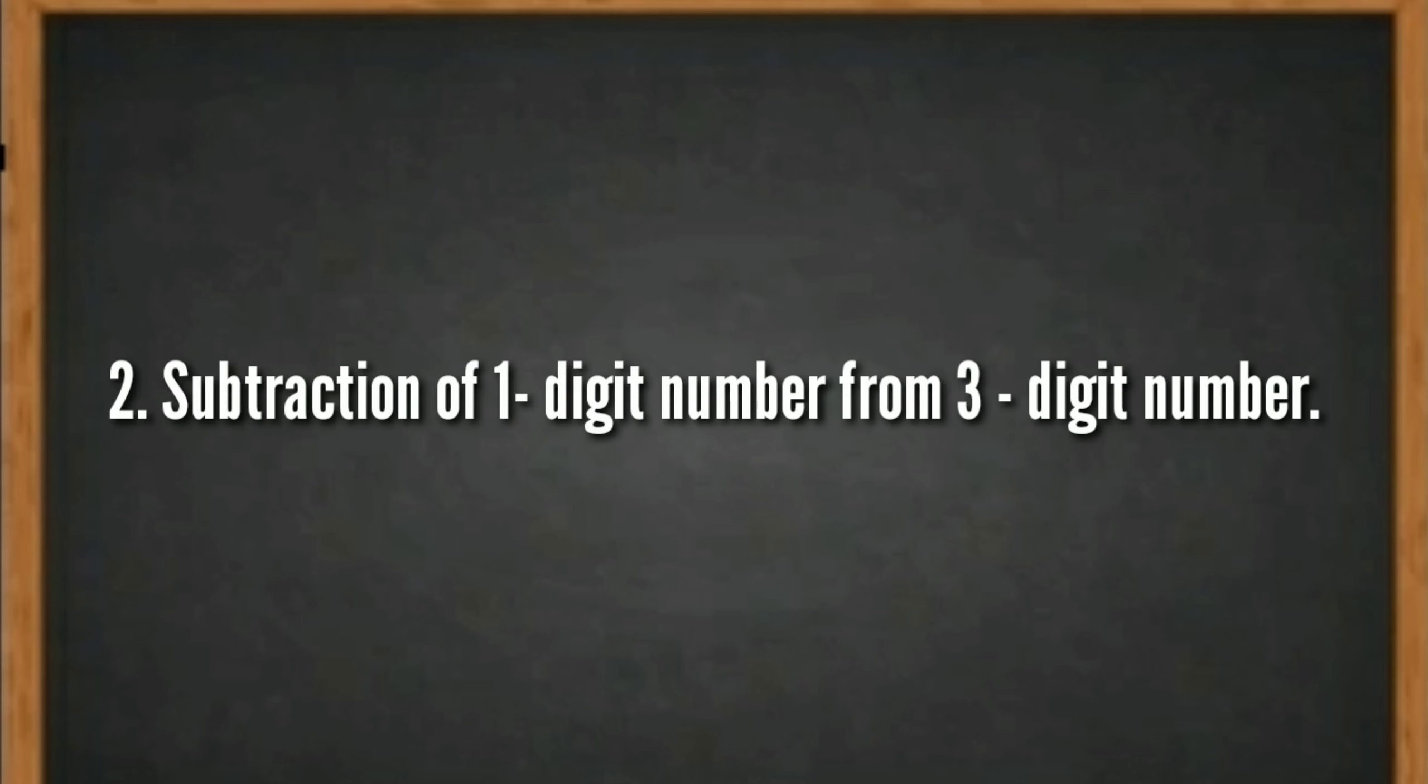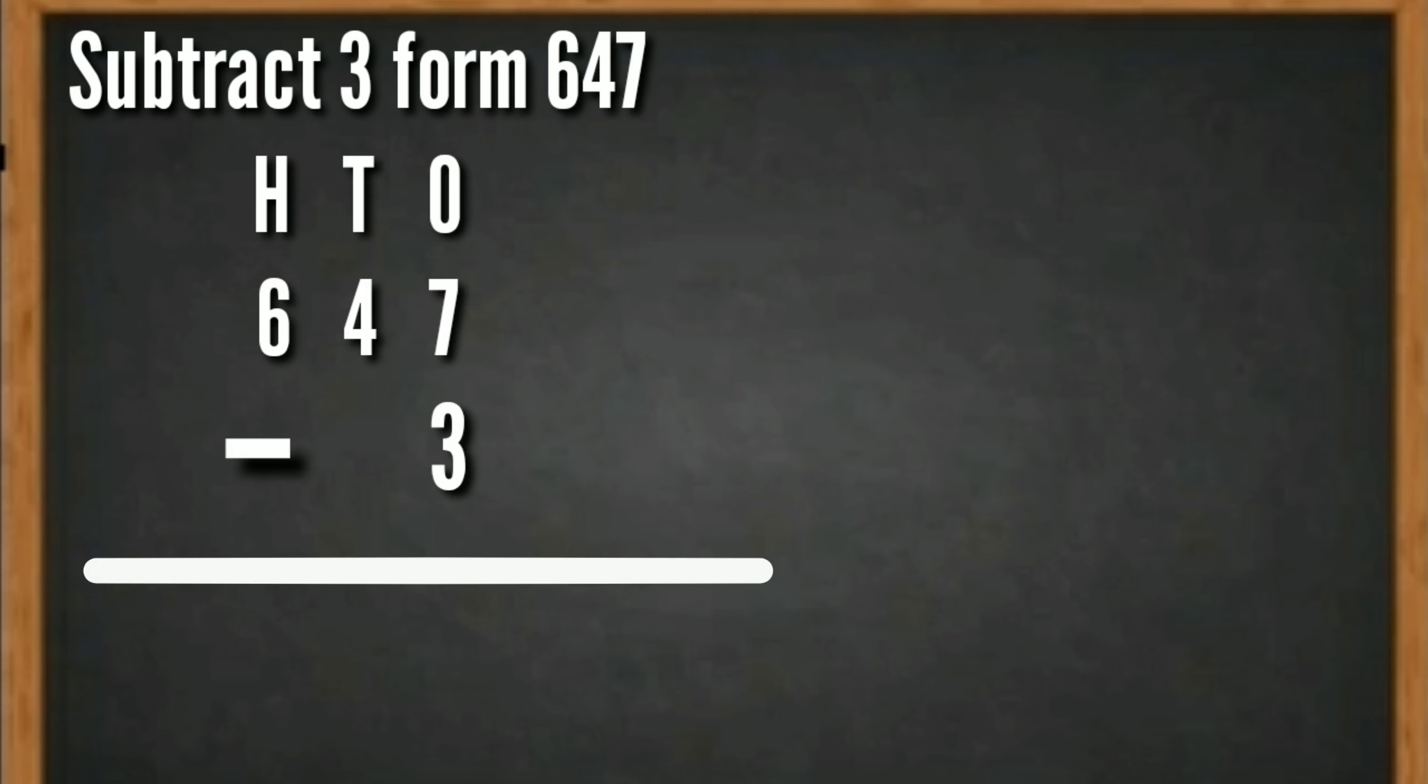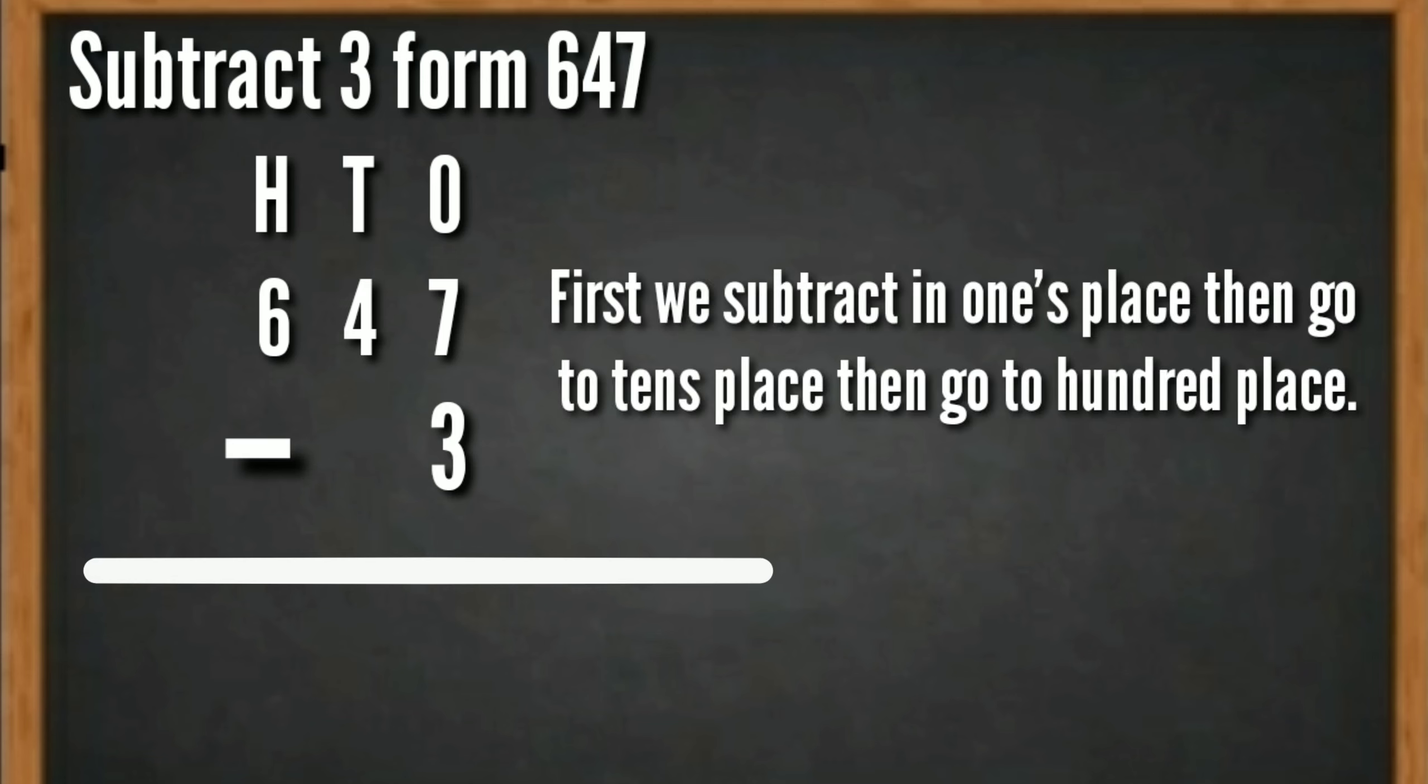Subtraction of 1 digit number from 3 digit number. Subtract 3 from 647. First we subtract in one's place, then go to ten's place, then go to hundred's place.